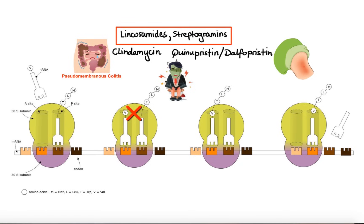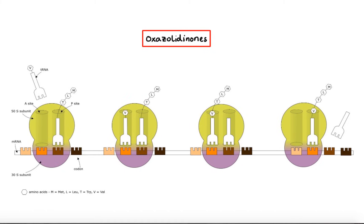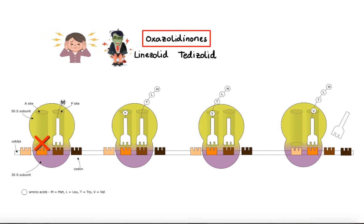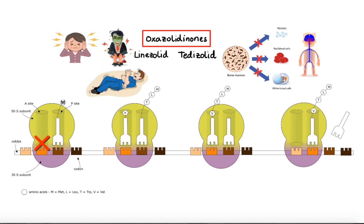Now let's move on to our last group of protein synthesis inhibitors: oxazolidinones. Unlike other protein synthesis inhibitors which primarily inhibit the elongation steps, oxazolidinones inhibit the first step of synthesis by binding to the A-site on the 50S ribosomal subunit, where they prevent initiation complex formation. Without a functional initiation complex, bacteria cannot synthesize proteins essential for their growth, ultimately resulting in bacteriostatic or bactericidal effect depending on the species. Examples of oxazolidinones are linezolid and tedizolid. The most common adverse effects are nausea, vomiting, diarrhea, headache, and dizziness. Less common but potentially more serious adverse effects include bone marrow suppression, optic and peripheral neuropathy, seizures, and abnormal liver function tests.